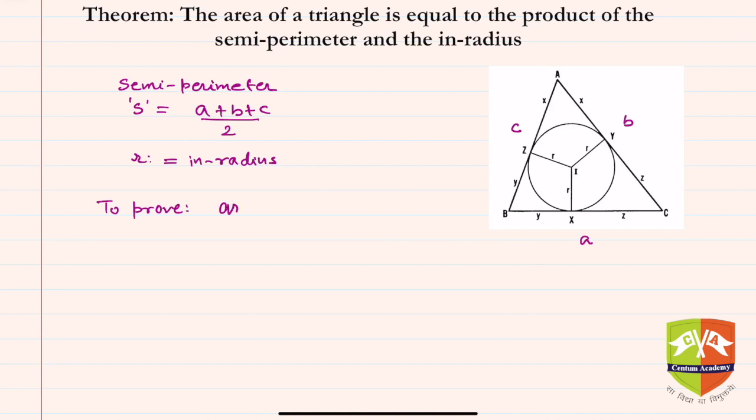Hence we have to prove that area of triangle ABC is equal to s into r. Let's see how we go about it. First of all, let's join BI—I happens to be the incenter—then IC, and then AI.